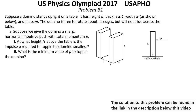Question A. Suppose we give the domino a sharp horizontal impulsive push with a total momentum p. Question 1: At what height above the table is the impulse p required to topple the domino smallest? Question 2: What is the minimum value of p to topple the domino?